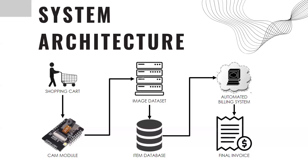How does this work? As soon as we place an object into the cart, a camera module integrated into the cart picks up the object and compares it with the image dataset already available. The moment it finds a match, it takes the object's name and price, compares it with the item database for the supermarket, then uses the automated billing system to add the object's details. Meanwhile, it also updates the supermarket's inventory to show the object has been picked up, and creates a bill on the spot as the user is shopping.